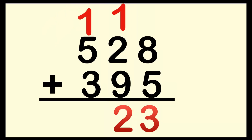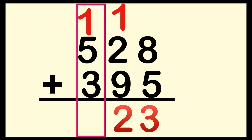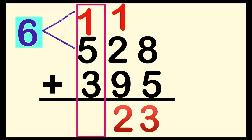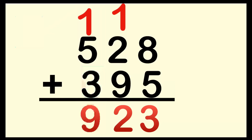After that, we can now proceed to the hundred's place. 1 plus 5 — put 5 on your mind: 5, 6. We have 6 here. Then 6 plus 3 — put 6 on your mind: 6, 7, 8, 9. We have 9 here. So the sum of 528 and 395 is 923.